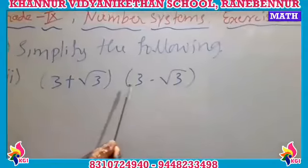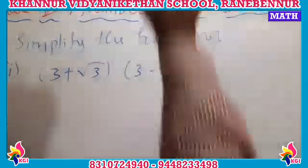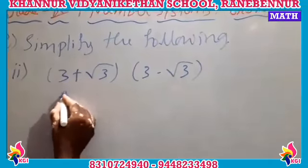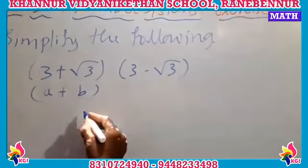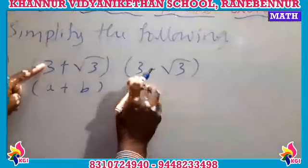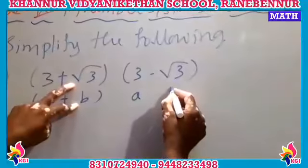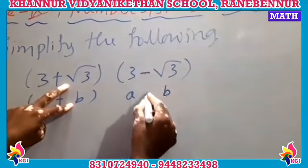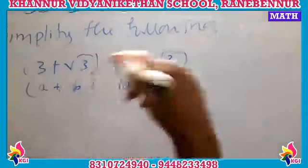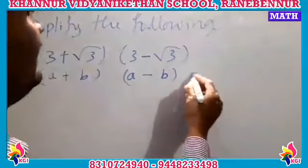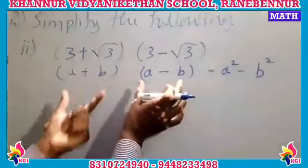The second expression is (3 + √3) into (3 − √3). Check it out — this matches the identity (a + b)(a − b). Here a = 3 and b = √3 in both factors. The middle signs are plus and minus respectively, so we can apply the formula: (a + b)(a − b) = a² − b².